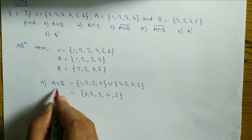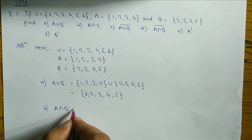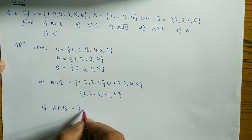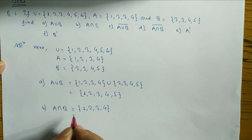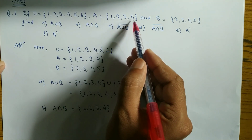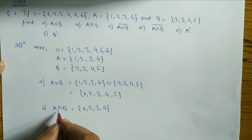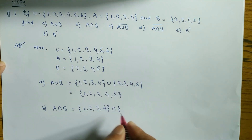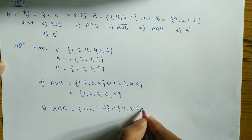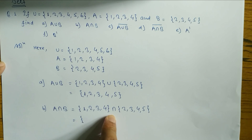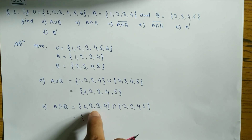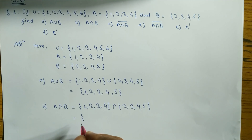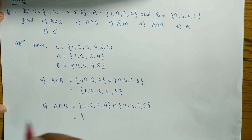Hope you understand how to find out A union B. Now in part (b) we have to find out A intersection B. Look at how to find this. Elements of A: {1, 2, 3, 4} intersection elements of B: {2, 3, 4, 5}. Intersection means the elements which belong to A as well as B — which are common. A intersection B means we take only the common elements.